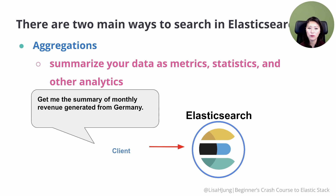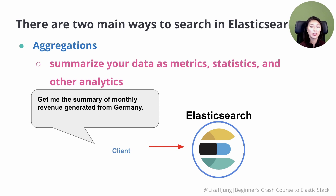So let's go back to our e-commerce app example and let's say we wanted the summary of monthly revenue from Germany. In this case, you need to send an aggregations request, which summarizes your data as metrics, statistics, or other analytics. Now with Elasticsearch, you can run both queries and aggregations, and so far we primarily focused on queries. In the next four episodes, we'll focus on different types of aggregation requests and when to use them.